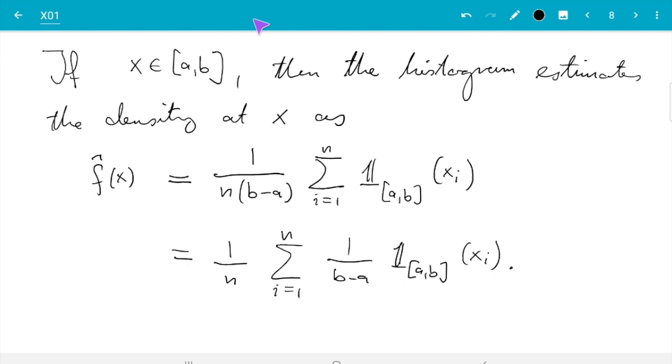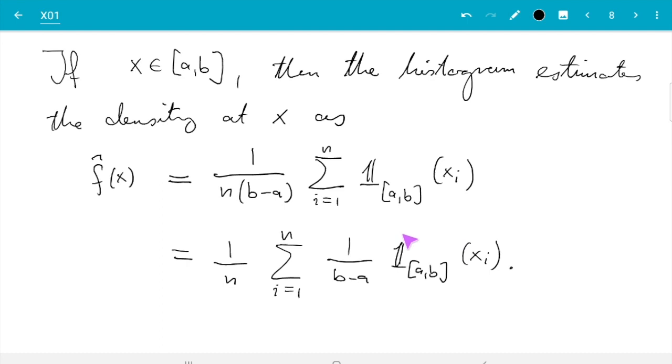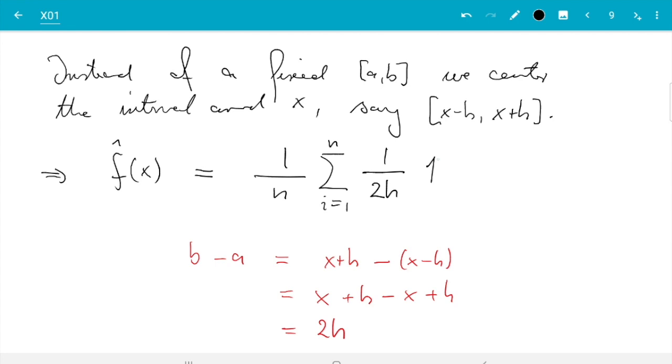So what we get is then f̂(x) = 1/n sum from i=1 to n, and then we need the width of the interval that is now b minus a is x plus h minus x minus h, which is 2h. And then here we have the indicator function of [x-h, x+h] of x_i.